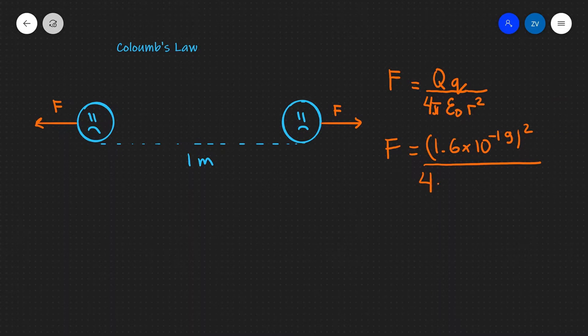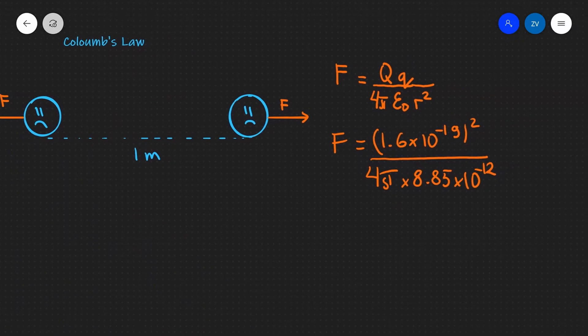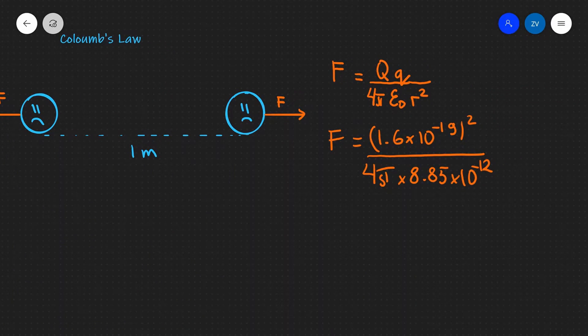I'm going to divide by 4 pi. Now the value of this constant epsilon naught is actually 8.85 multiplied by 10 to the power of minus 12. This is given in your formula booklet and you don't need to remember this for the exam. The distance here is just one meter, so in this case this is just essentially multiplied by 1 because 1 squared is equal to 1.